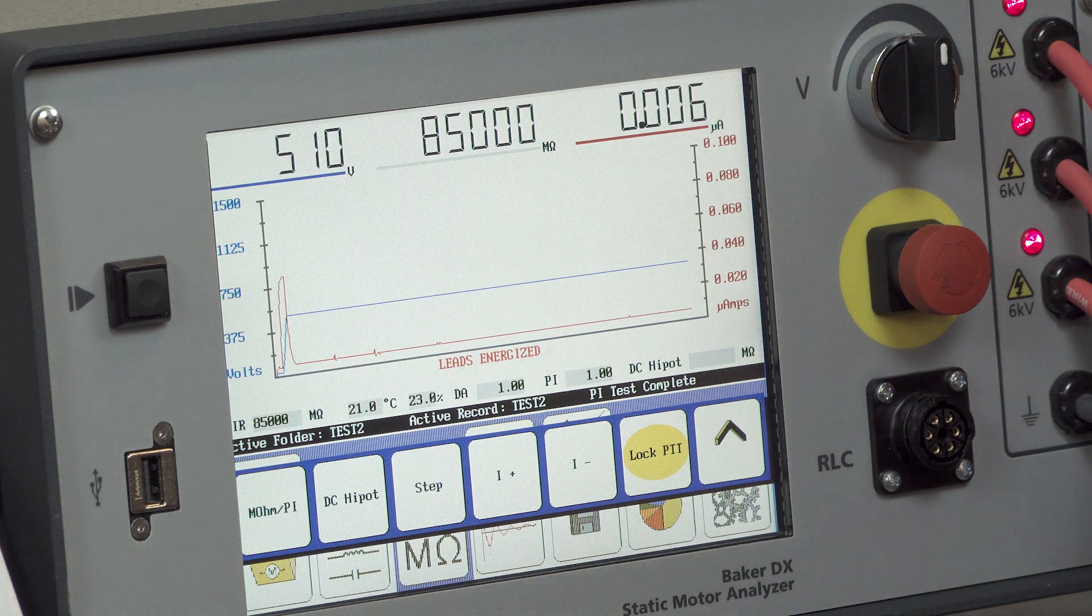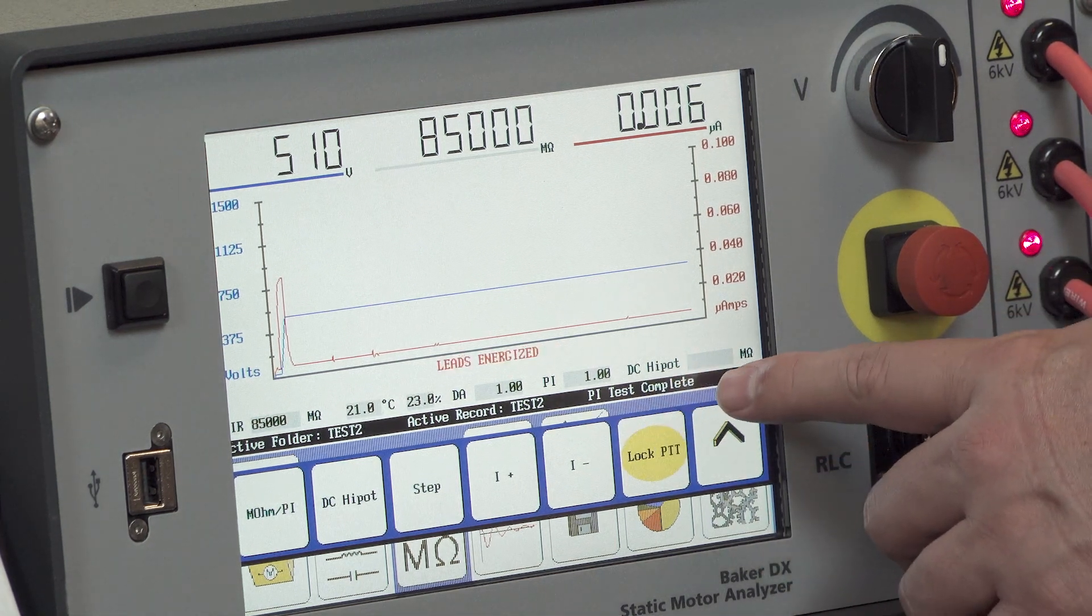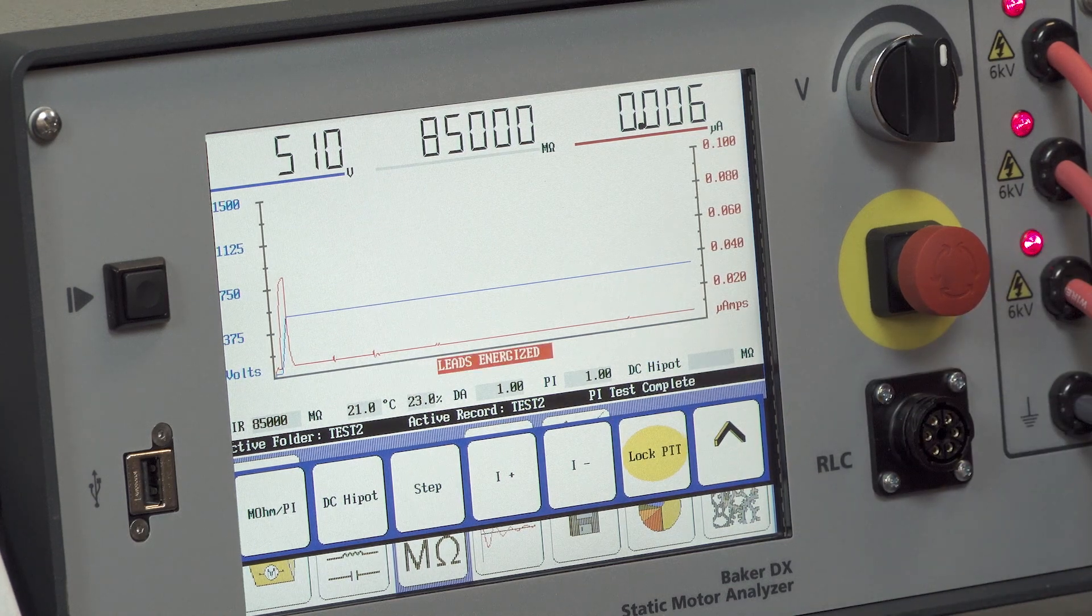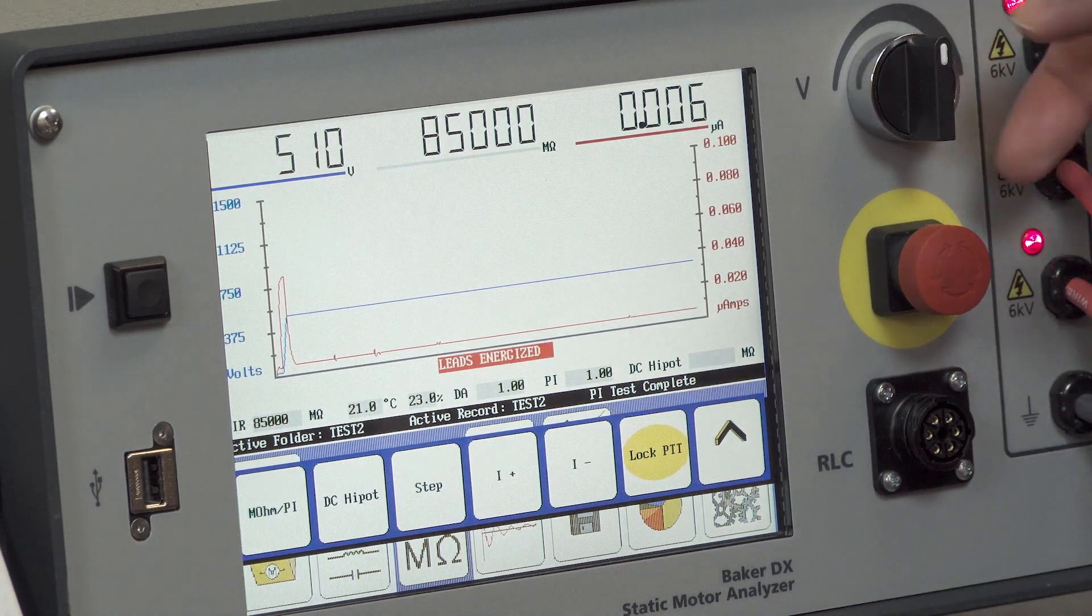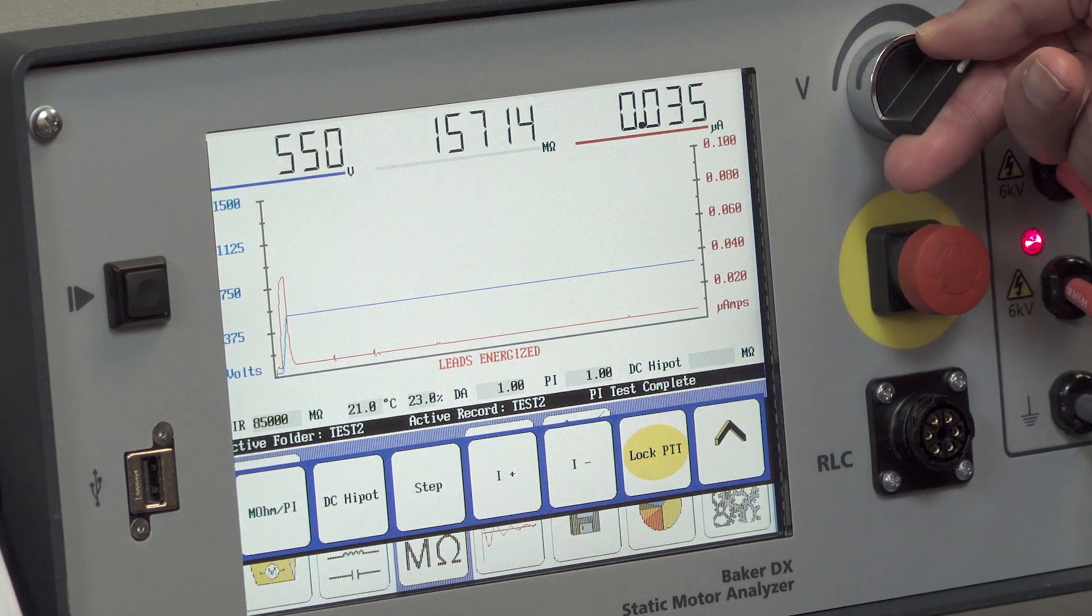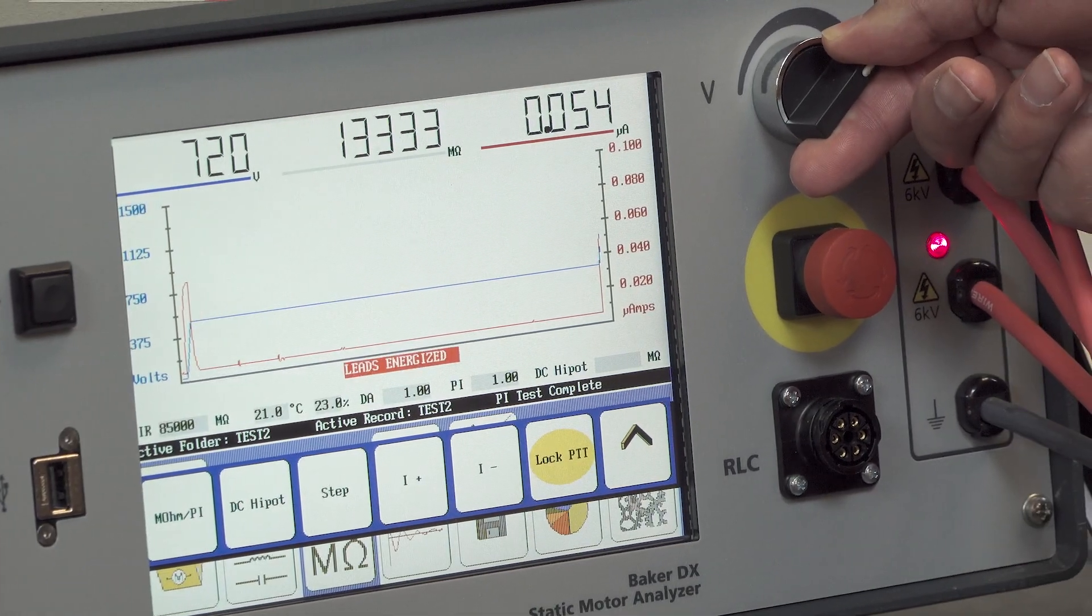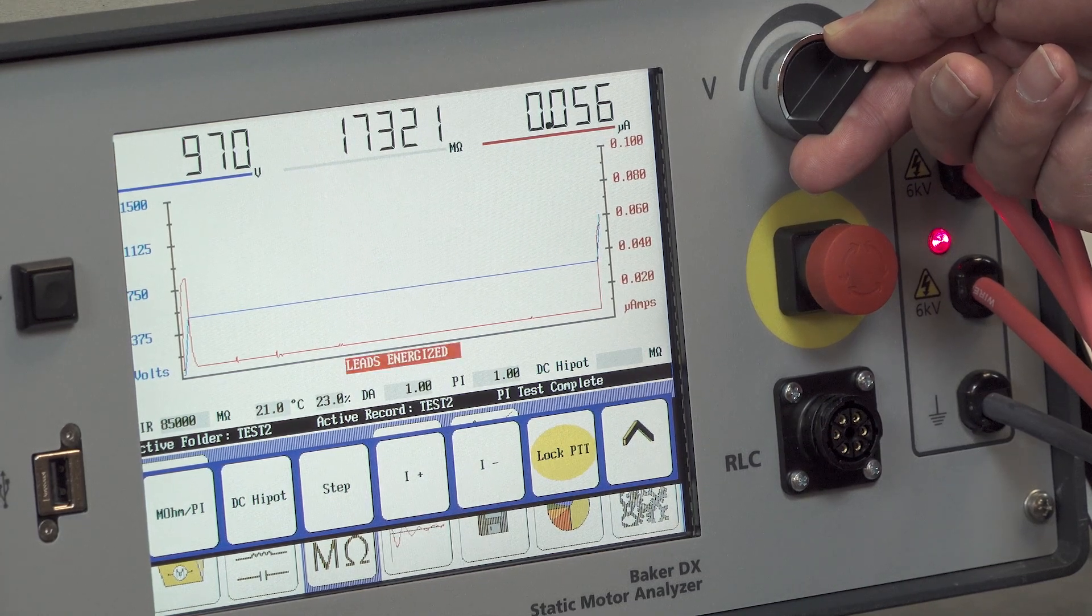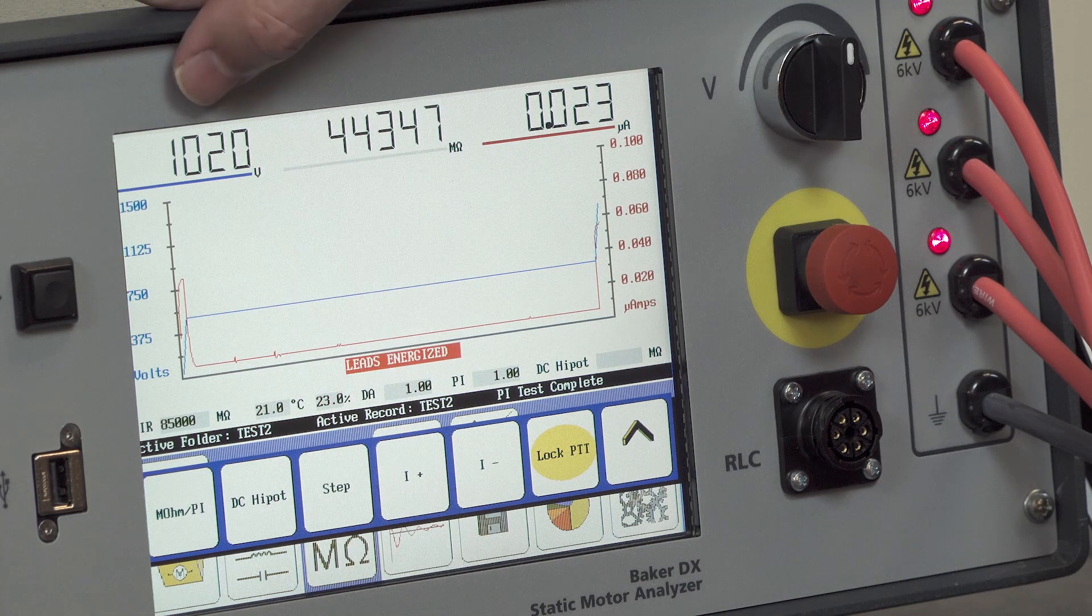Okay, now that the PI test is complete, we'll see PI test complete message in the lower right hand corner. We're ready to proceed on with a high potential test. Do that by simply increasing the voltage to the desired level. In this case I'm going to a thousand volts, I'm going to pause.